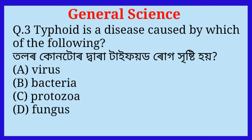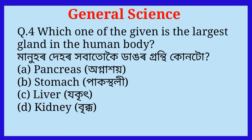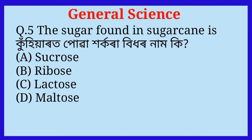Question number three: Typhoid is a disease caused by which of the following? The answer is option B, bacteria. Question number four: Which one of the given is the largest gland in the human body? The answer is option C, liver.